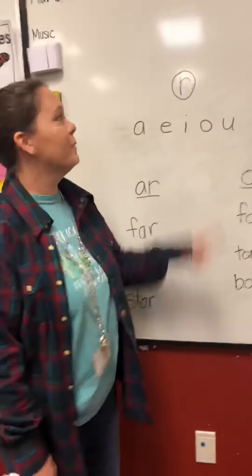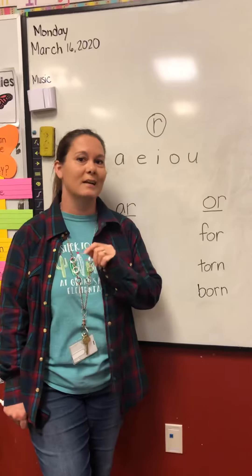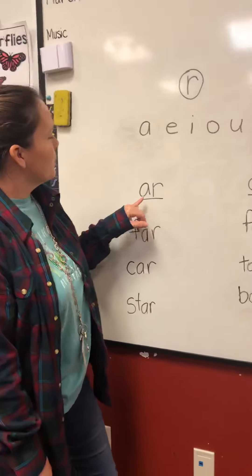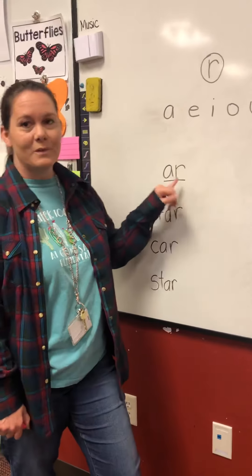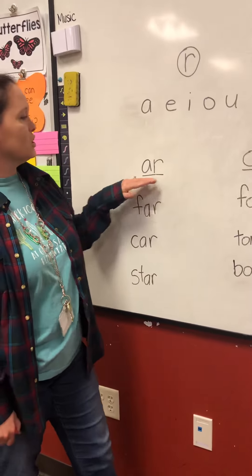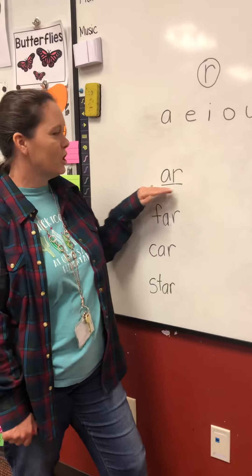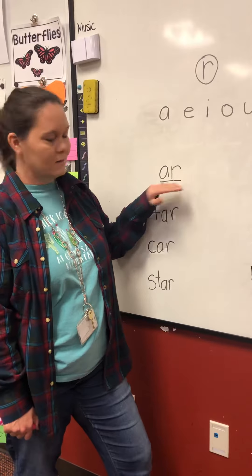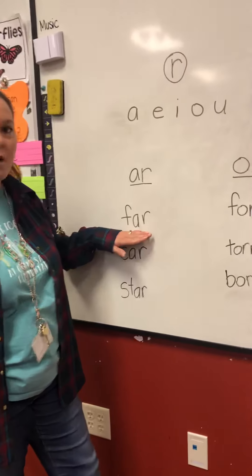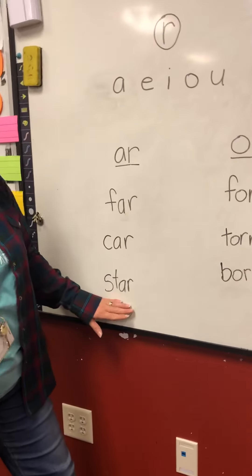Now when we pair the bossy R with a vowel it's going to change that sound. Here we pair the vowel A with R, the consonant R, and it changes the A sound from A to R. So let's practice a few. Here we have far, car, star.